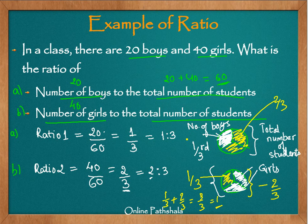Through this example, we have learned a few things. First, to calculate a ratio, the quantity being compared becomes the numerator, and the reference quantity becomes the denominator — for example, boys and girls were numerators, and total students was the denominator. Second, we always try to represent ratios in their lowest form to get simple numbers. Third, we used fractions to represent the ratios, as seen in both examples.